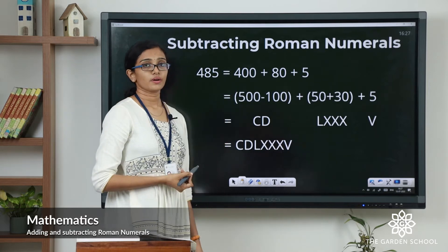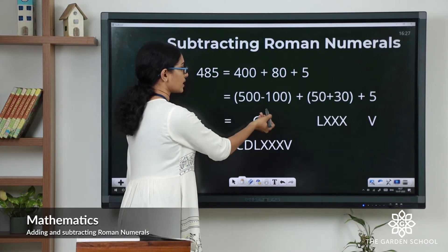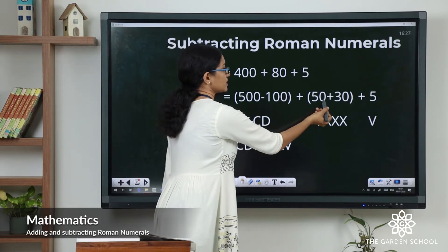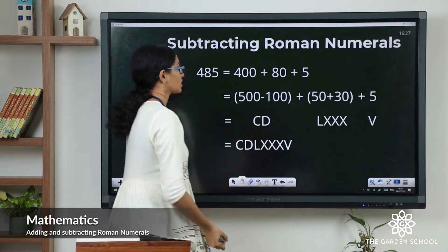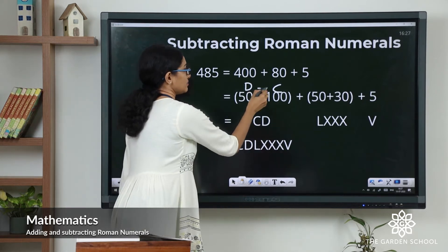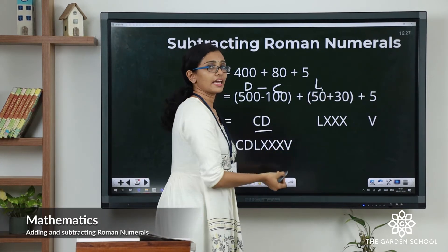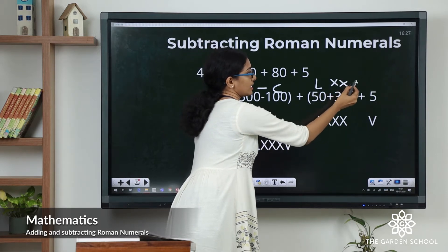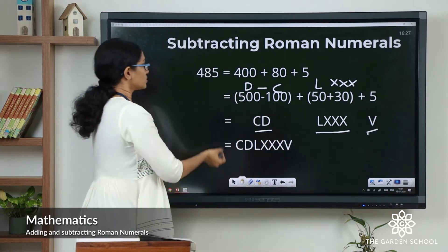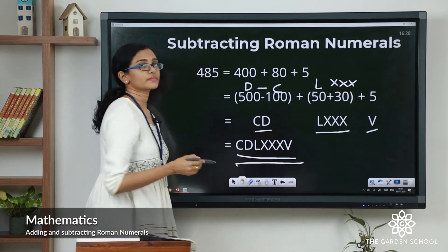485 equals 400 plus 80 plus 5. We don't have a symbol for 400, so rewrite 400 as 500 minus 100. 80 can be rewritten as 50 plus 30, and then we have 5. 500 is D, 100 is C — from the rule of subtraction D minus C is written as CD. Then 50 is L and 30 is represented by three X's. Adding 5, the Roman numeral for 485 is CDLXXXV. I hope this is clear to you.